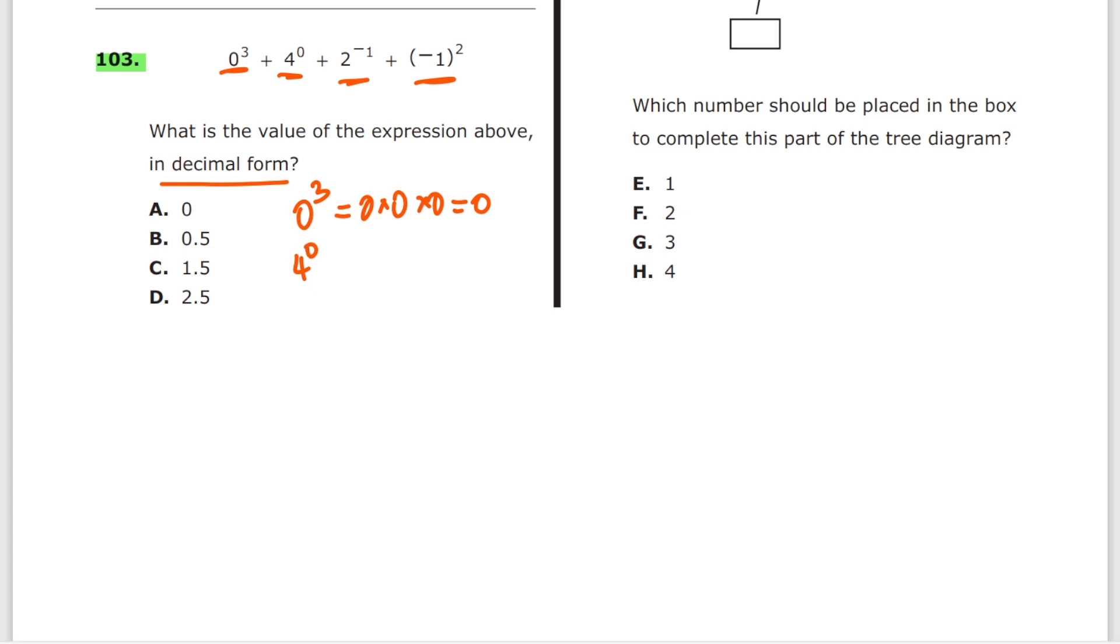Four to the power of zero, check the formulas, that's equal to one. All right. So this is zero, this is one. Two to the power of minus one. Most of you say this is minus two or something like this. It's wrong. It's equal to, remember the formula, a to the minus n is equal to one over a to the n. So two to the minus one is equal to one over two to the one, or just one half. So this is one half. And finally the last one, minus one squared. That's equal to minus one times minus one, which is just positive one. So you got zero plus one plus one half plus one. The answer is D. Memorize your exponent rules.